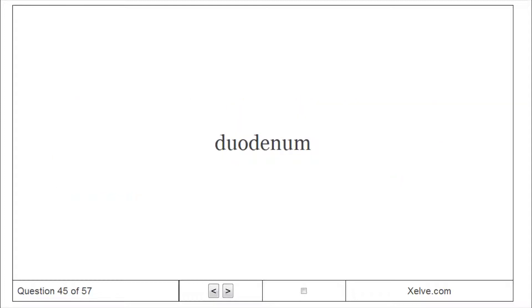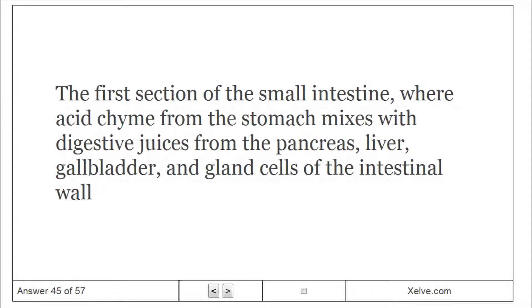Duodenum – the first section of the small intestine, where acid chyme from the stomach mixes with digestive juices from the pancreas, liver, gallbladder, and gland cells of the intestinal wall.